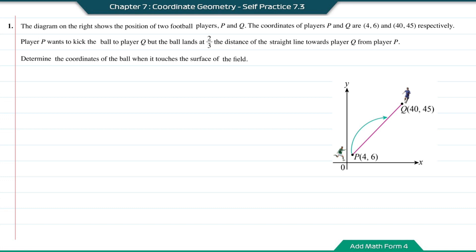Player P wants to kick the ball to player Q, but the ball lands at 2/3 the distance of the straight line toward player Q from player P. Determine the coordinates of the ball when it touches the surface of the field.